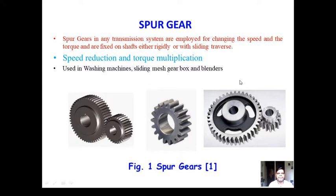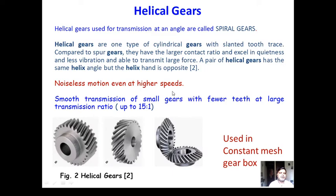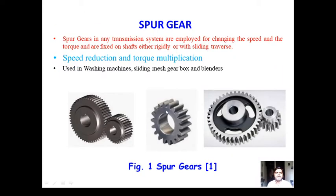The next classification is helical gears, which are used for transmission at an angle. As we can see from the images, the gears are cut at an angle, so the axis may be inclined. Due to this, the operation of these gears is noiseless because they are in constantly in touch with each other. Spur gears are used in the sliding mesh gearbox of an automobile.